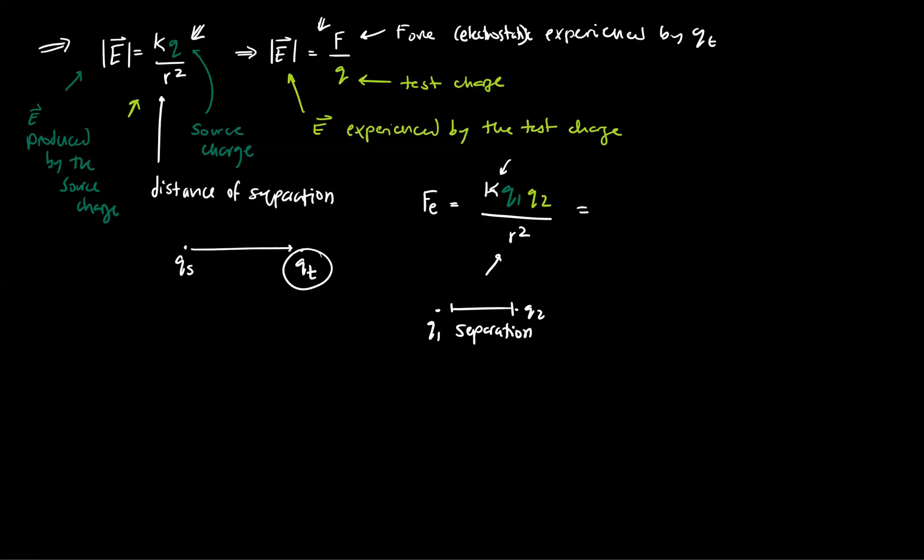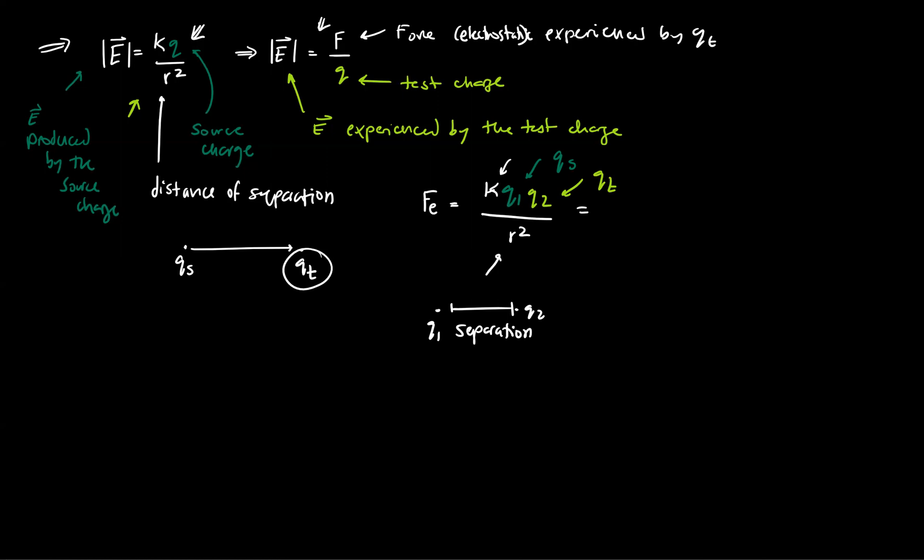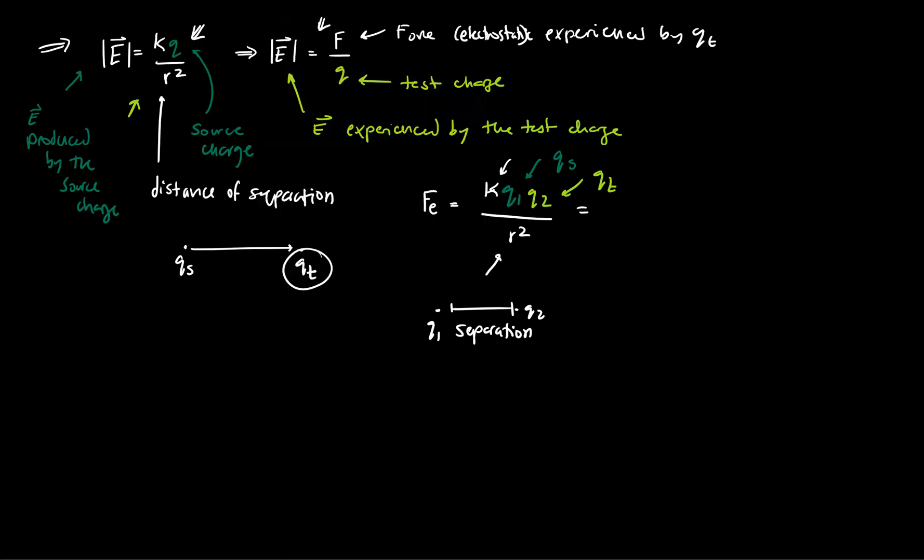What we can do here is we can say, let's say q1 is equal to our source charge, let's call that qs. And let's say q2 is equal to our test charge, we'll call it qt. So we can find an expression for the force that's experienced between these two charges. And that expression is literally just what we see in Coulomb's law: k times our source charge q source times our test charge q test, divided by that radius of separation squared.